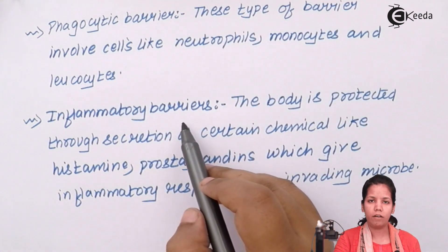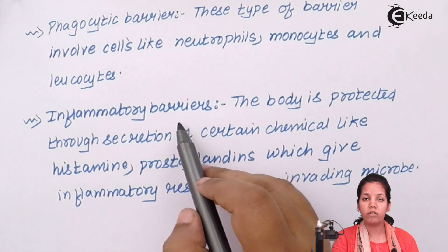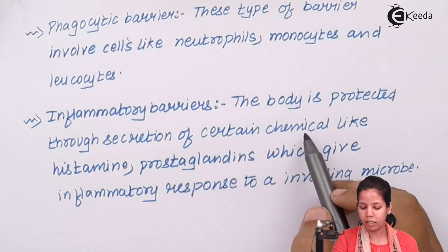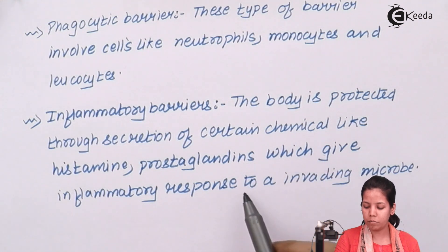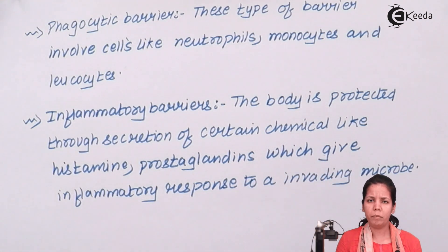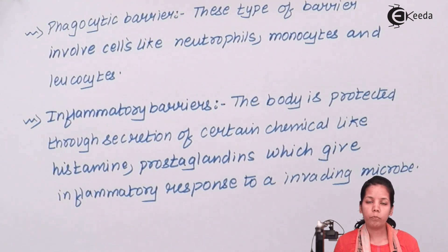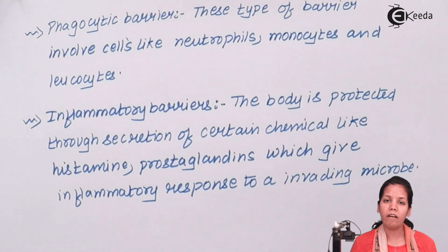Inflammatory barriers are the last kind of barriers. When I say inflammation, it means a sudden response to a trigger immune antigen. The body is protected through secretions of certain chemicals like histamines and prostaglandins, which give an inflammatory response to an invading pathogen. For example, if there is an entry of a pathogen inside your body, your body would produce histamine chemicals that will elicit an immune response and call other cells so they can come and fight the infectious organisms.